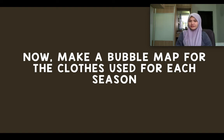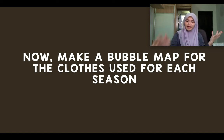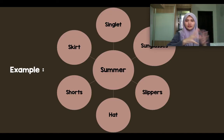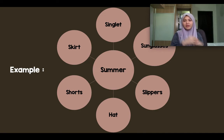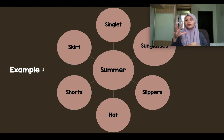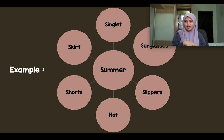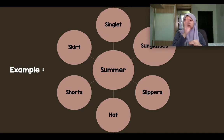Now you need to make a bubble map for the clothes used for each season. A bubble map uses circles — bulat-bulat — connected together. Here is an example I've made for you: for summer, you wear singlet, sunglasses, slippers, hat, shorts, and skate.